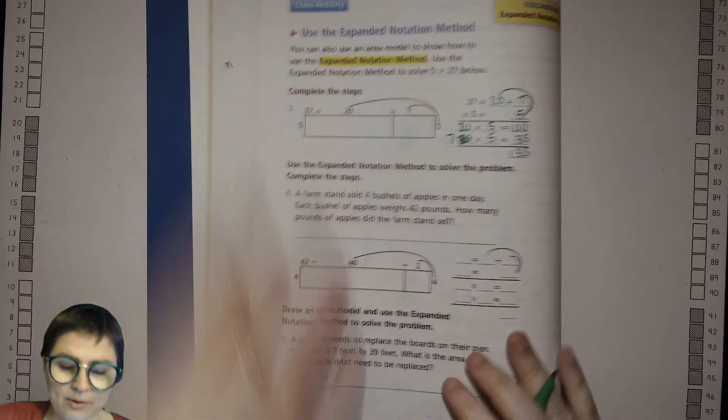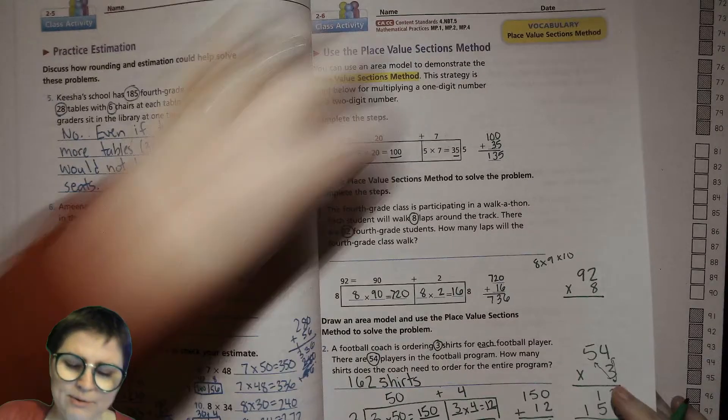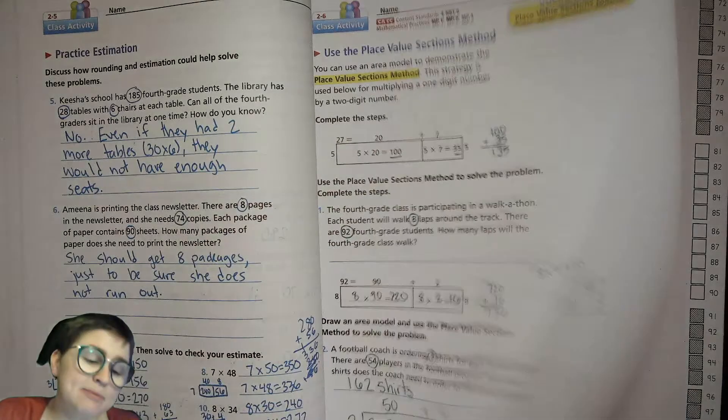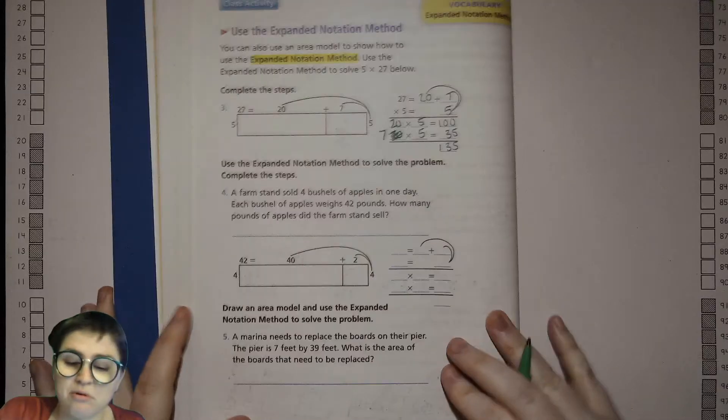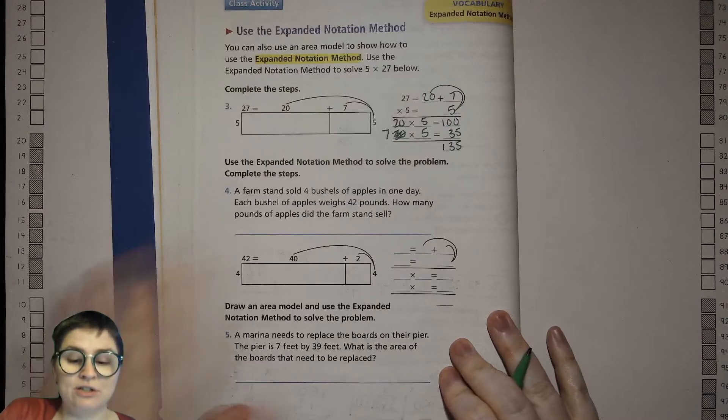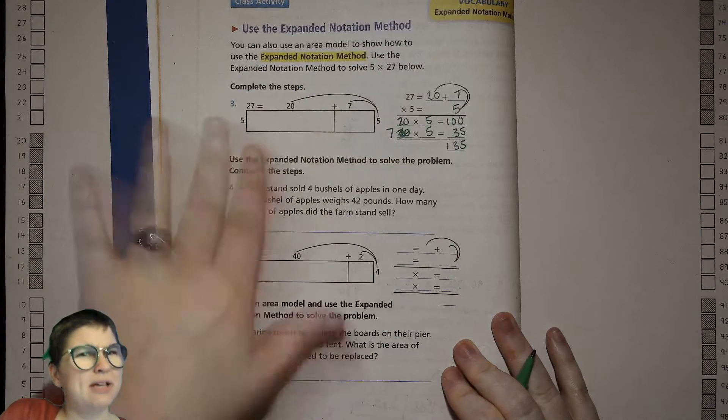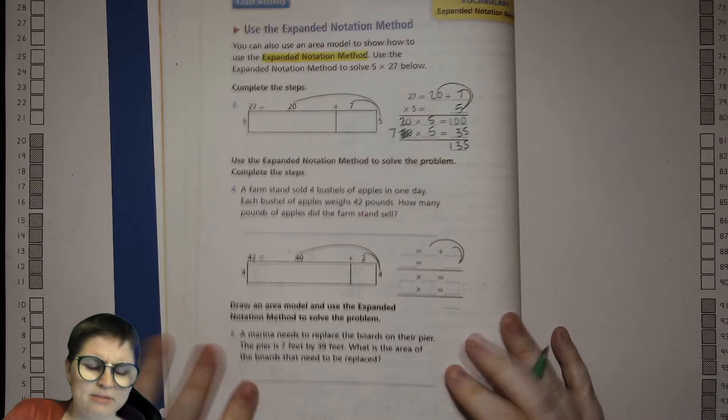So basically what in the past one we did—we wrote inside the box—now we're just writing it to the side. Sometimes that might be better if the boxes are kind of small, or maybe eventually you can skip the box altogether. But keep the box if it's helpful for you. I like the box.